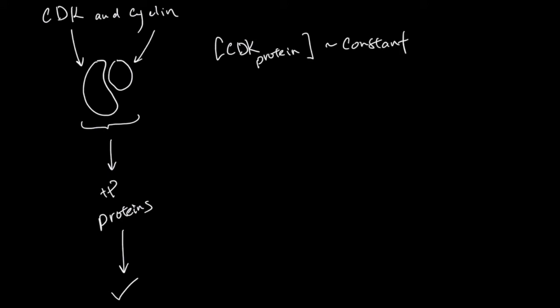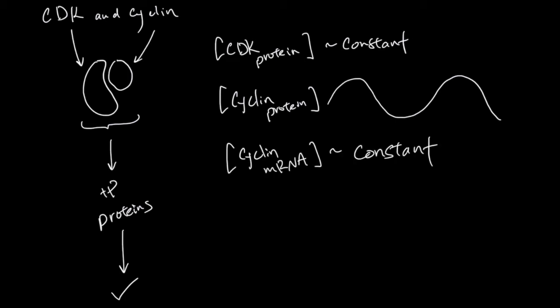The concentration of cyclin protein in a cell oscillates, goes up and down and up and down. But the amount of cyclin mRNA, the making of cyclin proteins, is constant. So the cyclins are made constantly, but their protein concentration oscillates.